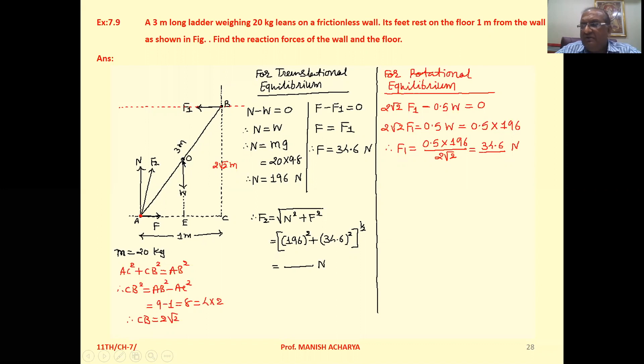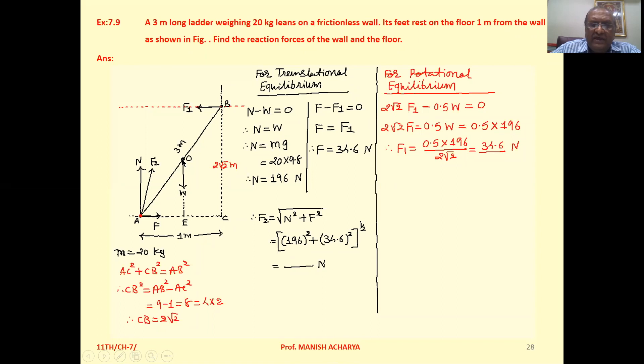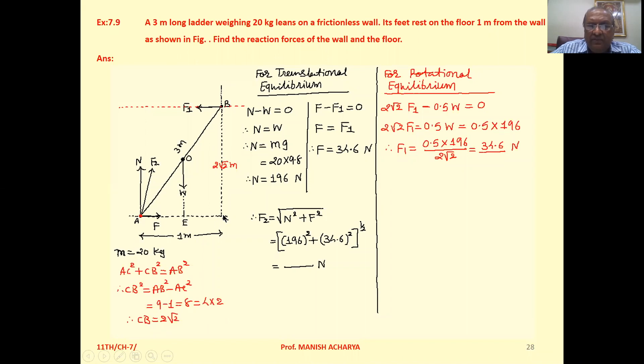The center of mass of the ladder will be at the midpoint here. So we can represent the weight of the ladder from the center of mass. As Pythagoras theorem, we can write AC square plus CB square equals AB square. So CB square equals AB square minus AC square. Then CB will come to 2 root 2.